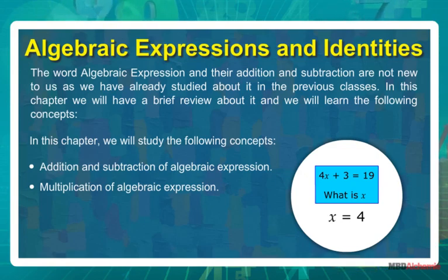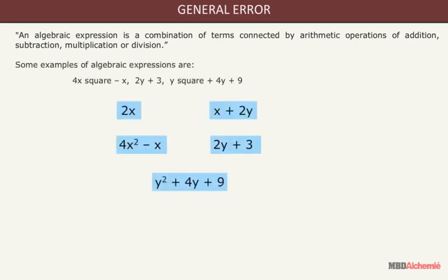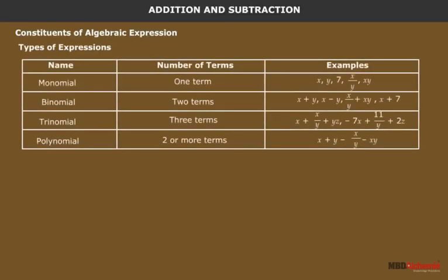An algebraic expression is a combination of terms connected by arithmetic operations of addition, subtraction, multiplication, or division. Some examples of algebraic expressions are: 2x, x plus 2y, 4x squared minus x, 2y plus 3y squared plus 4y plus 9. On the basis of the number of terms, algebraic expressions can be classified into monomial, binomial, trinomial, and polynomial.